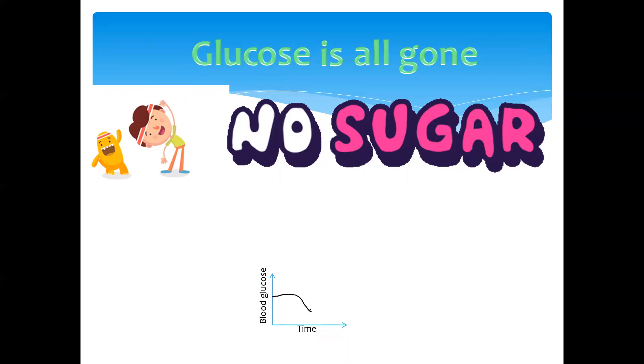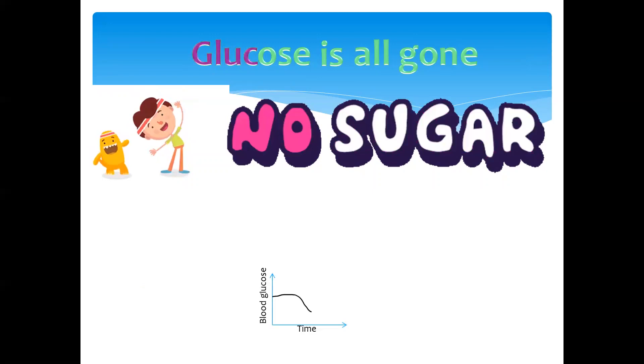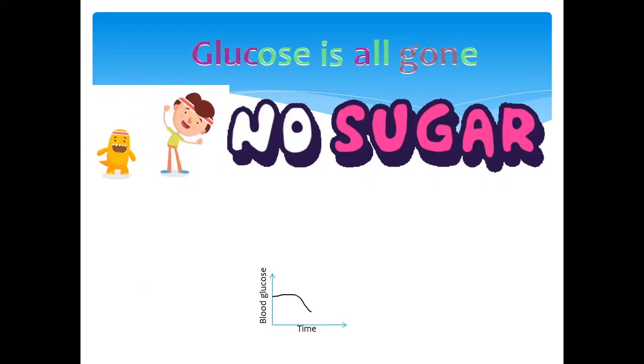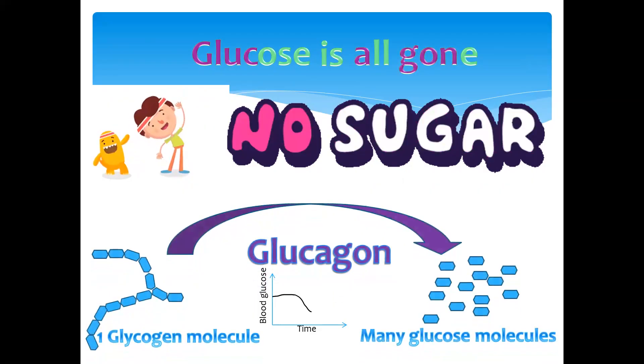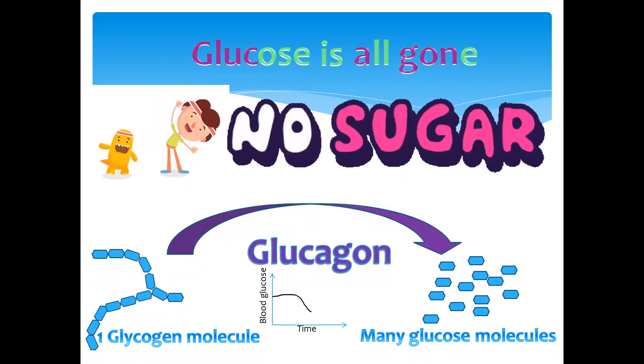We need to get some glucose, and though a person hasn't eaten to increase it, what the body does in that case is: the glucose is all gone, so glucagon is released. The glucagon will change the stored glycogen in the liver and muscles into glucose molecules.